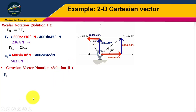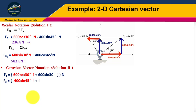Therefore, F1 equals 600 cos 30 i plus 600 sin 30 j Newtons. F2 equals minus 400 sin 45 i plus 400 cos 45 j Newtons.